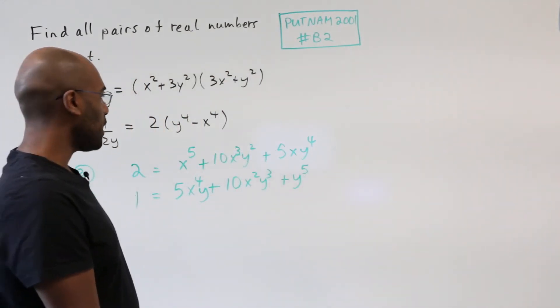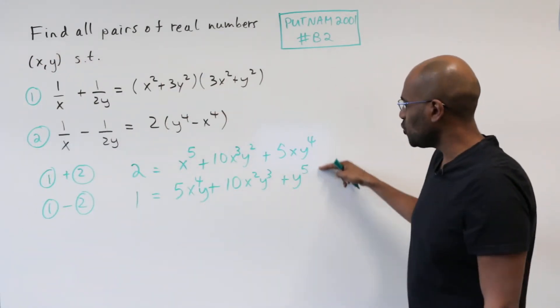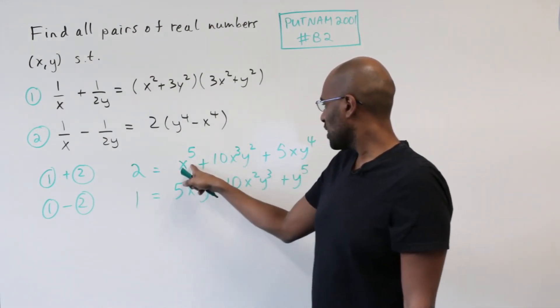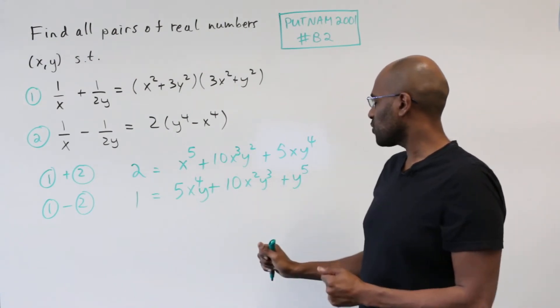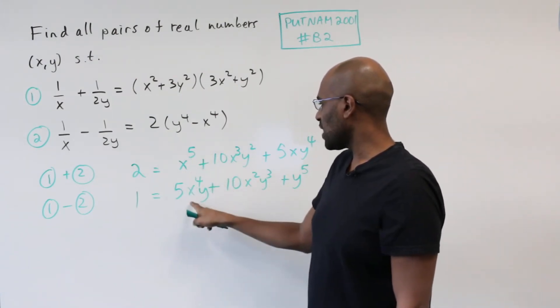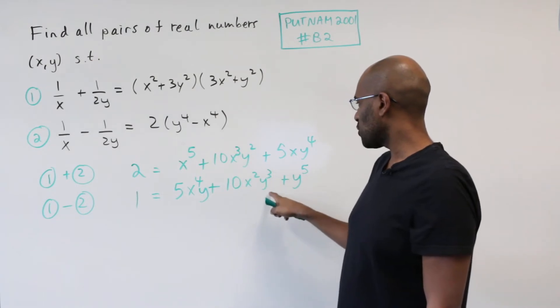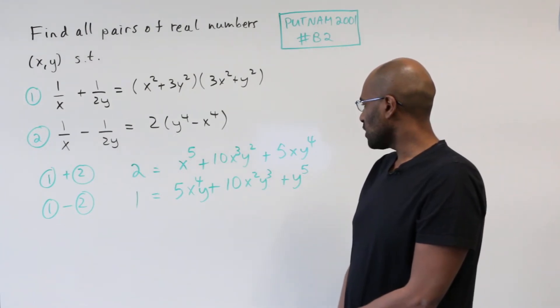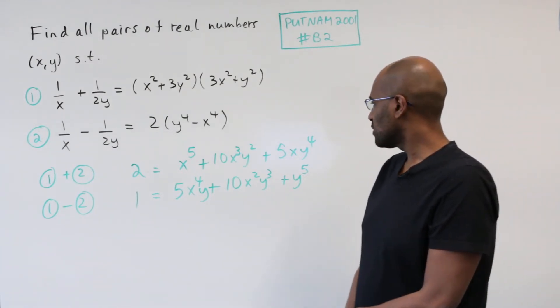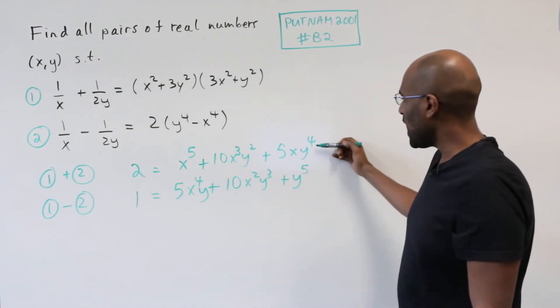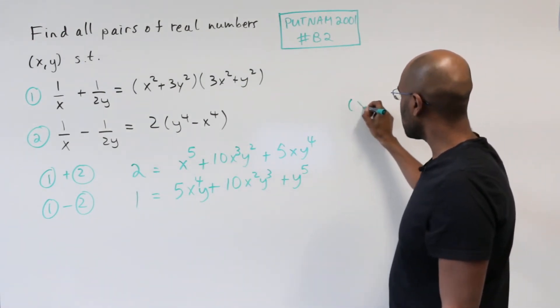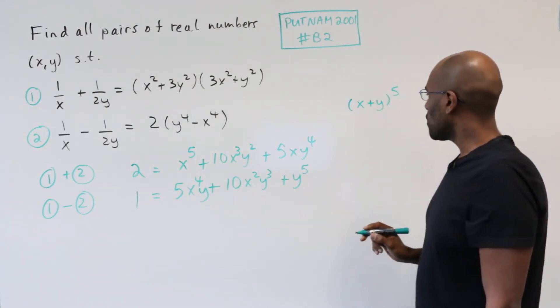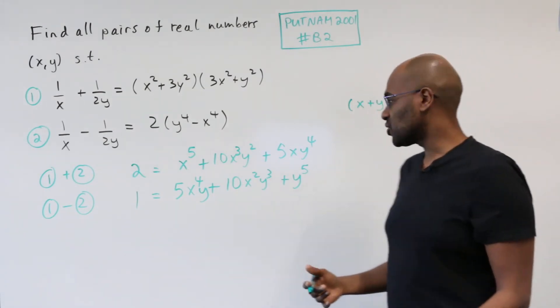But I do want to make an observation about something. If you look at the two right hand sides of the two equations, you notice you have the variable x with powers of it descending while y increases. So you have x to the fifth and x to the fourth y, x cubed y squared, x squared y cubed, x y to the fourth, y to the fifth. Well this is interesting. This looks like some kind of binomial expansion. In fact, if you added these two things, you'd get exactly the binomial expansion of x plus y to the fifth.